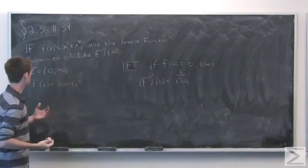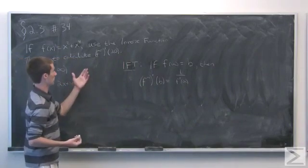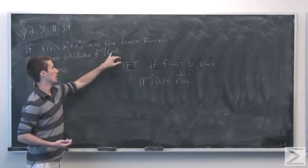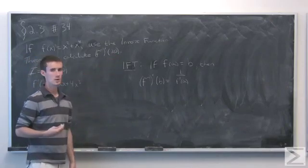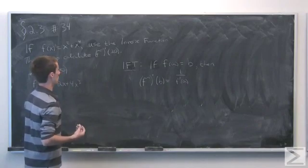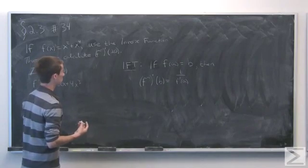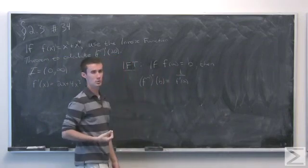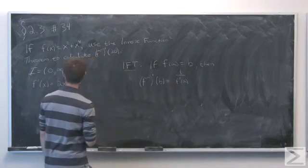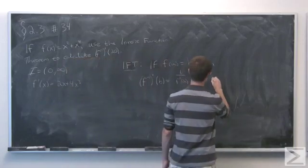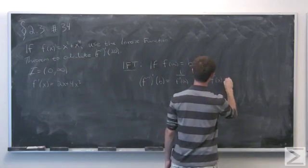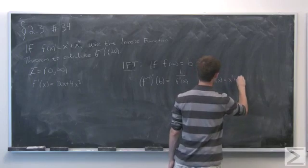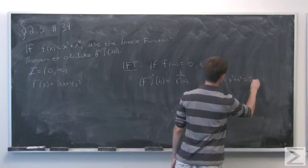So we see that we have a value. We're asked to calculate f inverse prime at the value b equals 20. First of all, we need a value a such that f(a) is equal to 20. So let's see if we have f(x) = x² + x⁴ = 20.